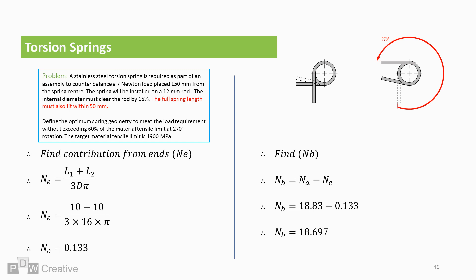And, therefore, the contribution to the coil count from the main body is active turns minus contribution, which gives us 18.697.